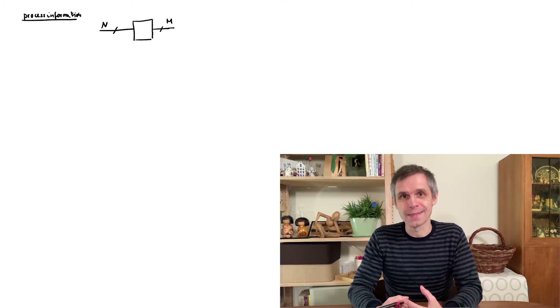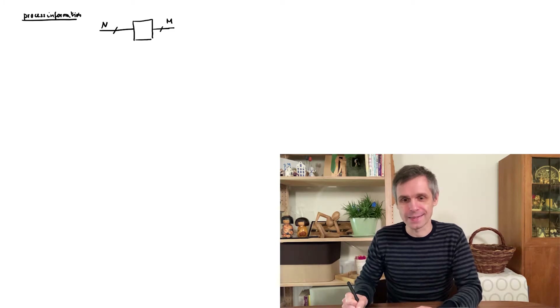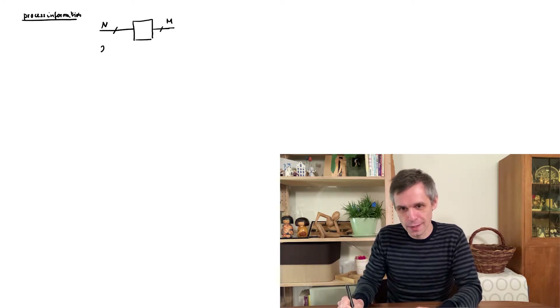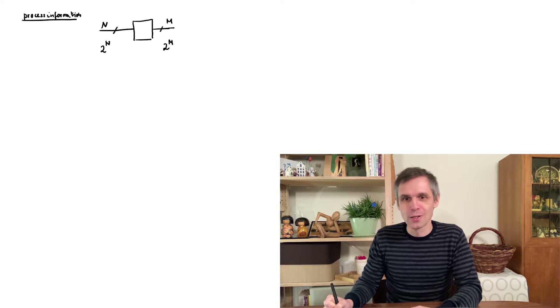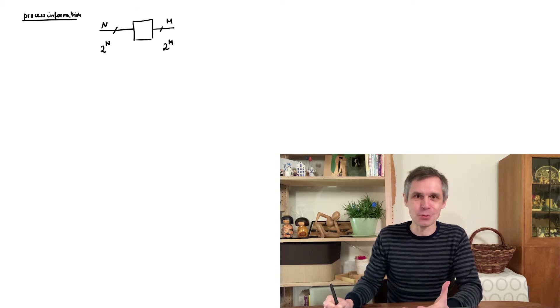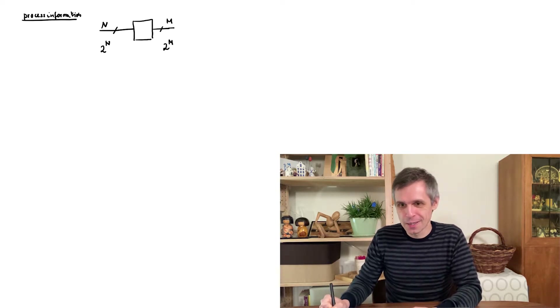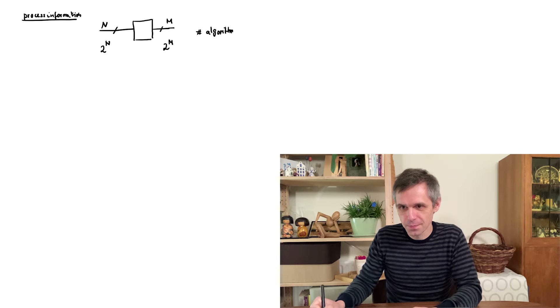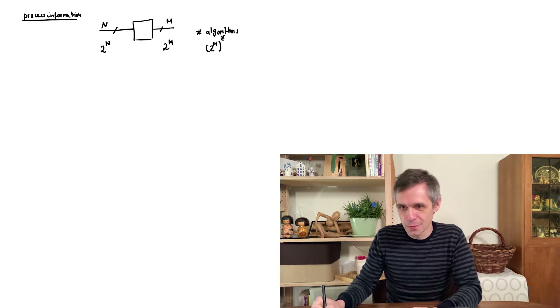Now we want to have a very general way to do this, and at first this looks like a daunting task, because we have two to the n possible inputs and for each of these we have two to the m possible outputs. So how many different ways are there to process the information? The number of ways, or number of algorithms if you like, is two to the m to the power two to the n.